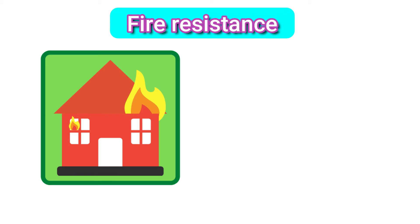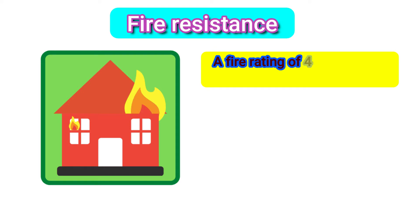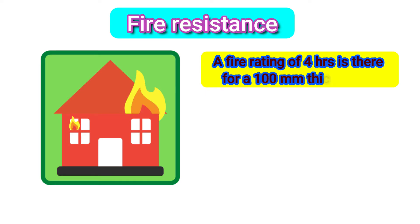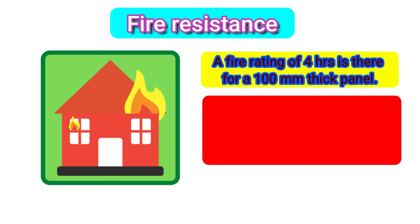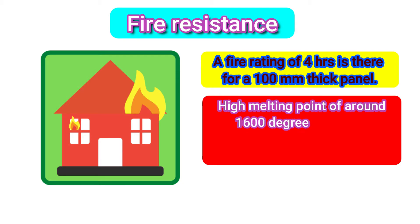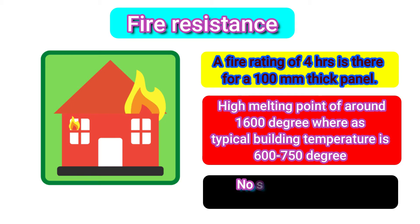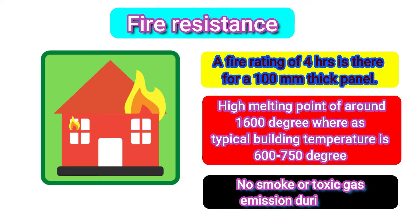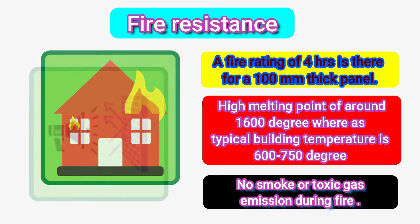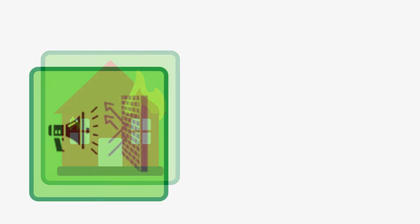Next is the fire resistant qualities of ALC Panels. A fire rating of around 4 hours is there for a 100 mm thick panel. ALC Panels have a high melting point of around 1000 degrees, whereas a typical building fire temperature is around 600 to 750 degrees. No smoke or toxic gases are emitted during a fire incident.